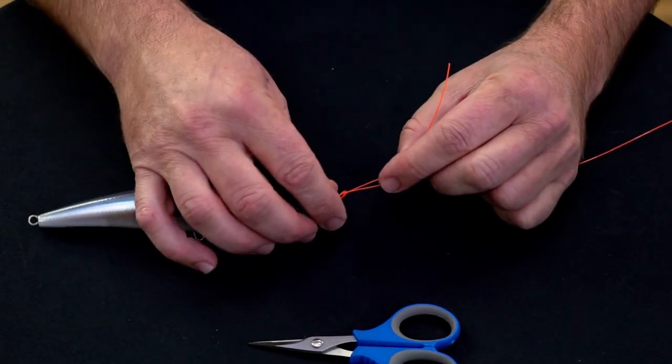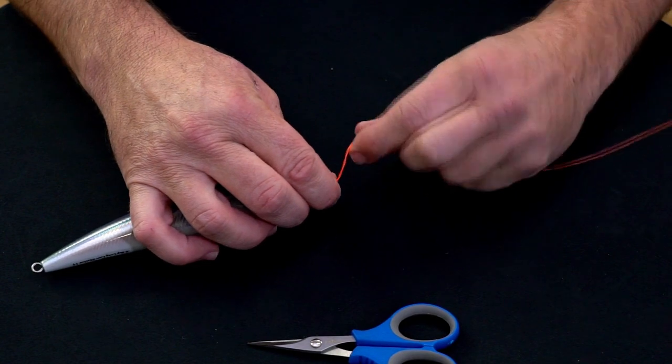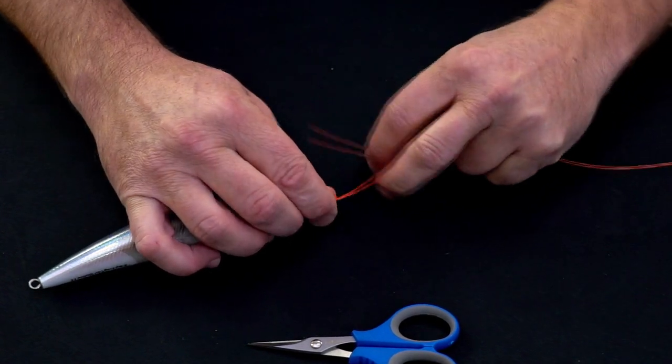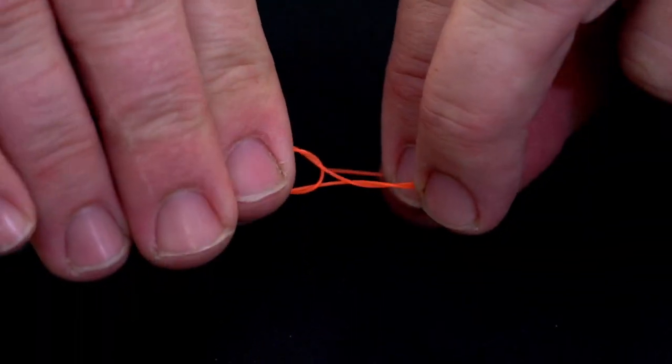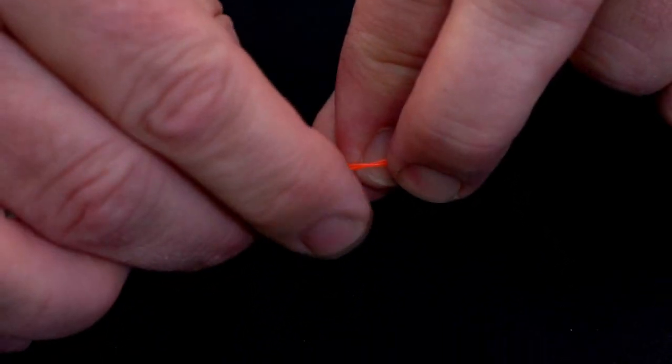It's all we've done so far. Then simply twist around the main line once, twice, and you'll see it's created a very small V. We poke it through the V, and the key to this knot...